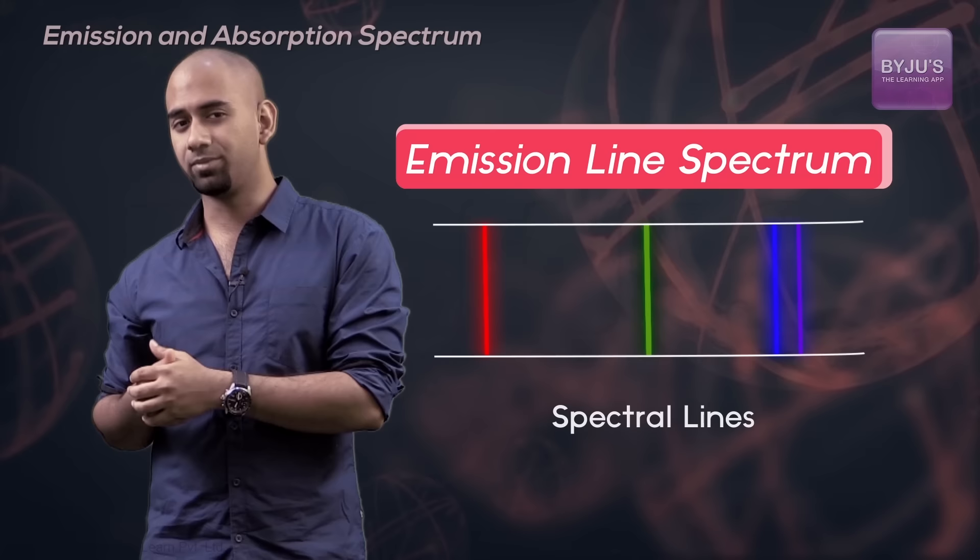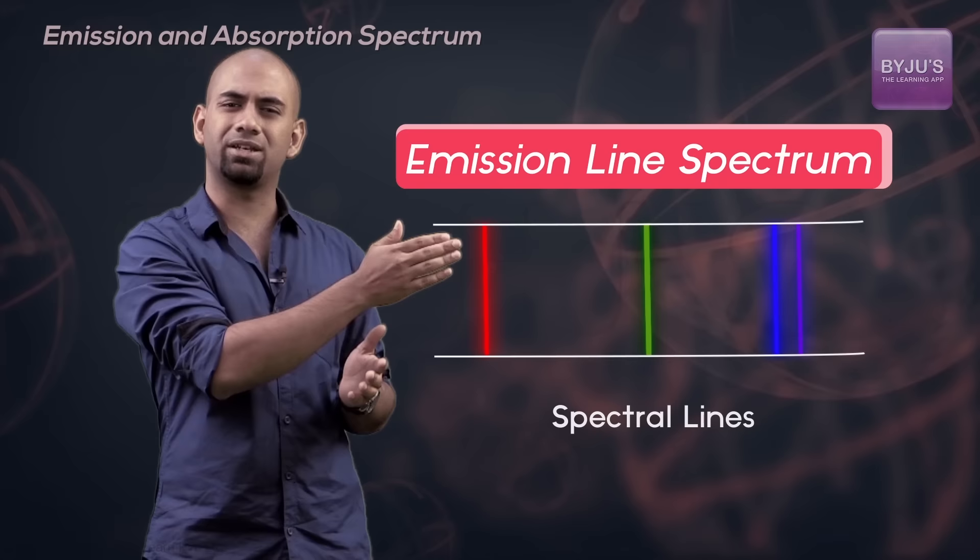It was also found that this set of spectral lines was characteristic for a particular element. In other words, an element always produced the same set of spectral lines.